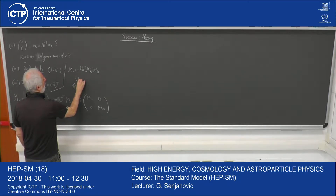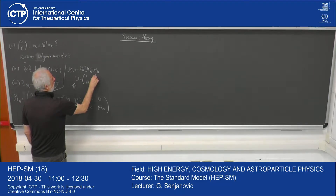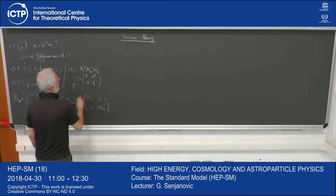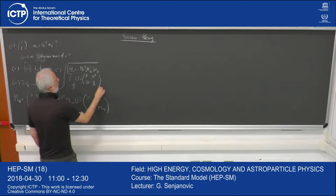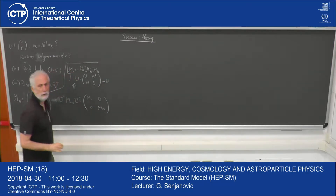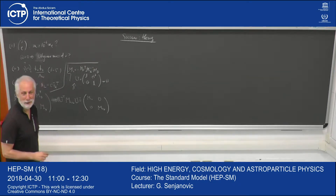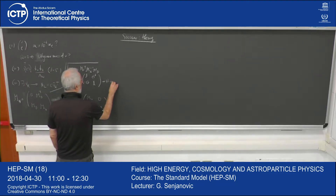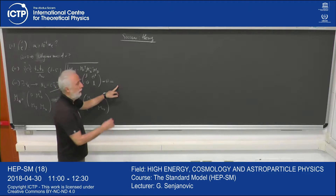We block-diagonalized the mass matrix by performing a rotation U_transpose * M * U, putting it in diagonal form: block diagonal with M_nu and M_N. M_nu came out as minus M_Dirac_transpose * M_N^{-1} * M_Dirac. The mixing matrix U was approximately the identity with off-diagonal blocks: theta and minus theta_dagger, where theta is M_N^{-1} * M_D.